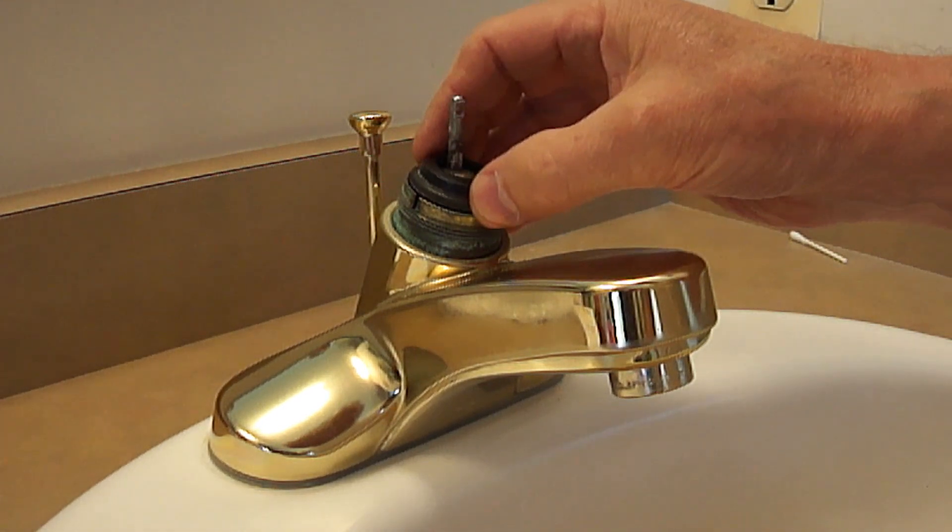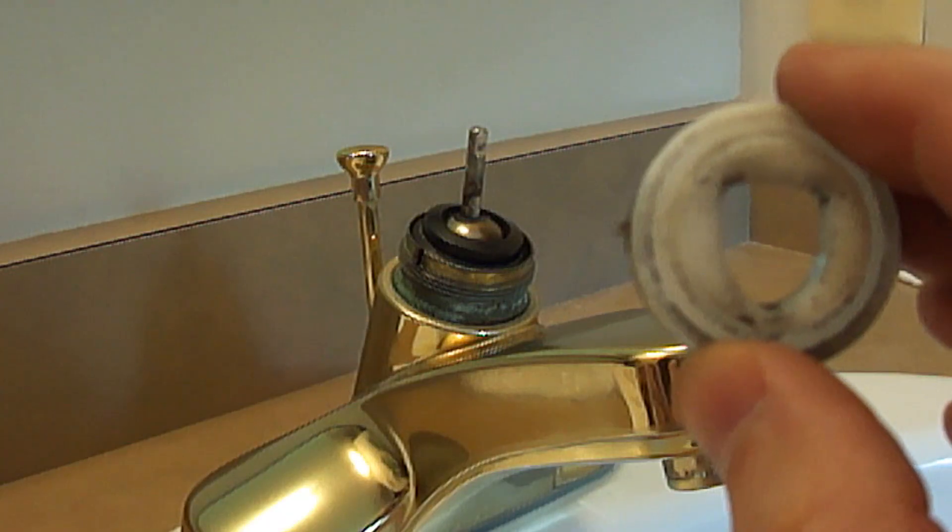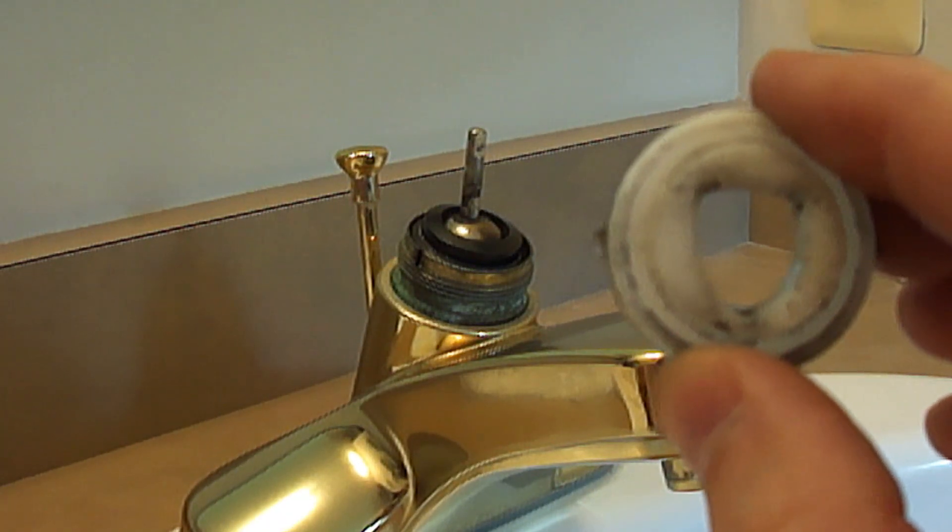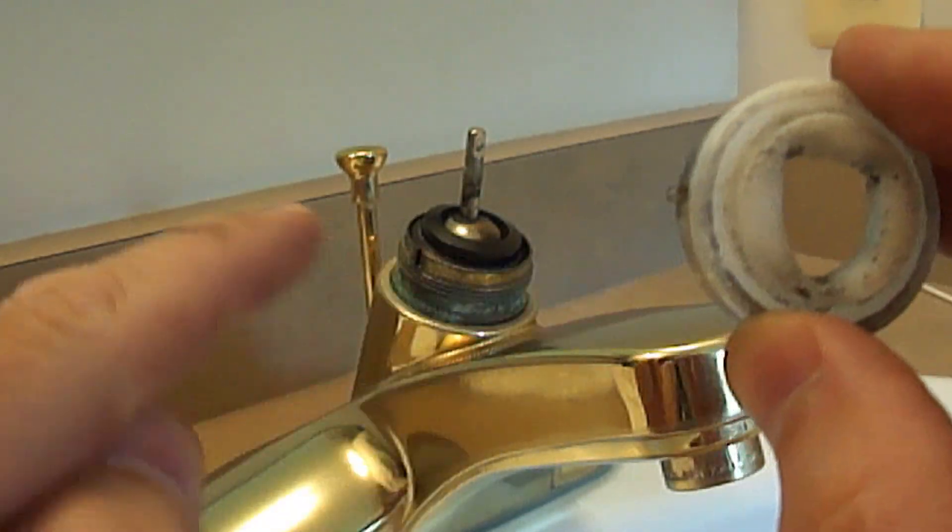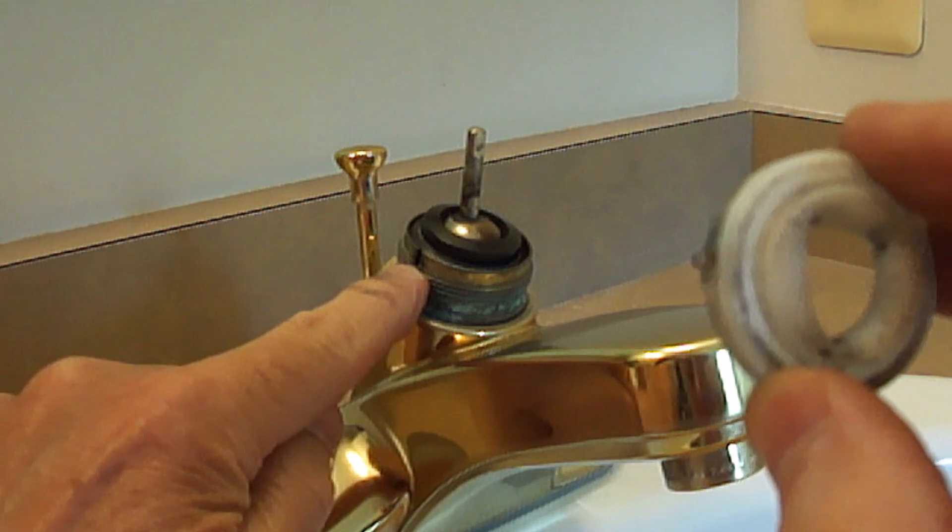Next, install the rubber collar back in. Next, we'll reinstall our plastic collar. Make sure this area which sticks out on the edge of the collar is lined up with the slot here.